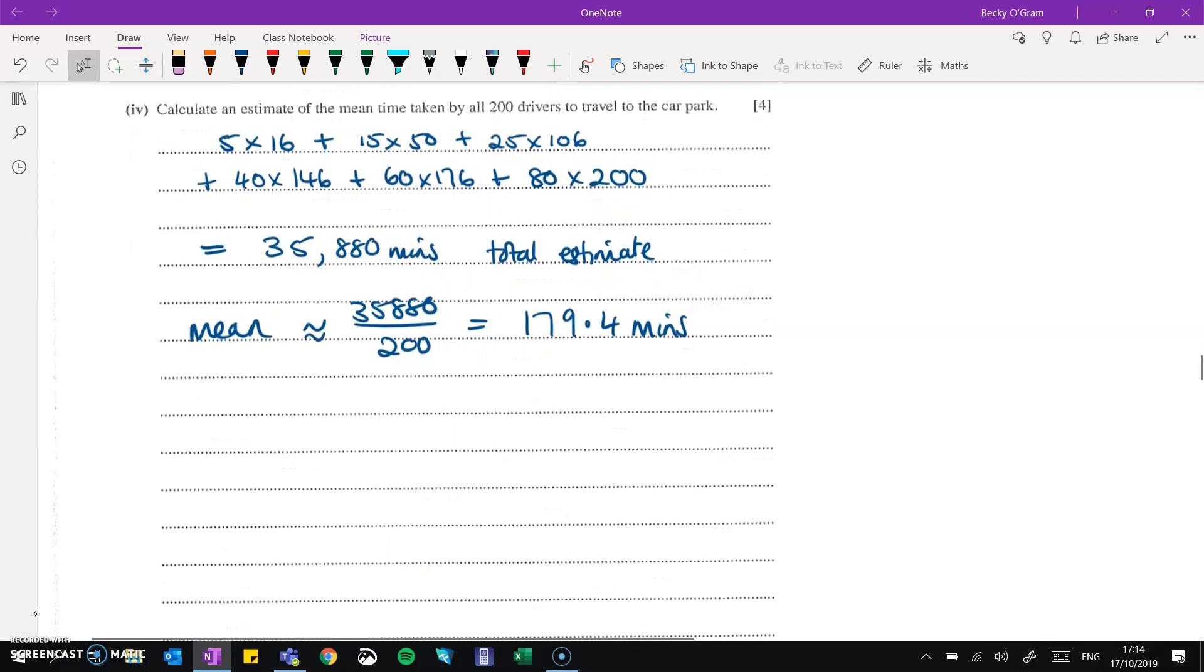Then calculate an estimate of the mean taken by all 200 drivers to travel to the car park. So for this, we do the midpoint of the interval. So this was going from 0 to 10. We had 16 people. So we do halfway, which is 5 times the 16. From 10 to 20, we had 50 people. So halfway from 10 to 20 is 15 times it by the 50. So we're using those midpoints as estimates for each interval, multiplying by the frequency. That gets us a total of 35,880, which we divide by our 200 people. And we can get 179.4 minutes.